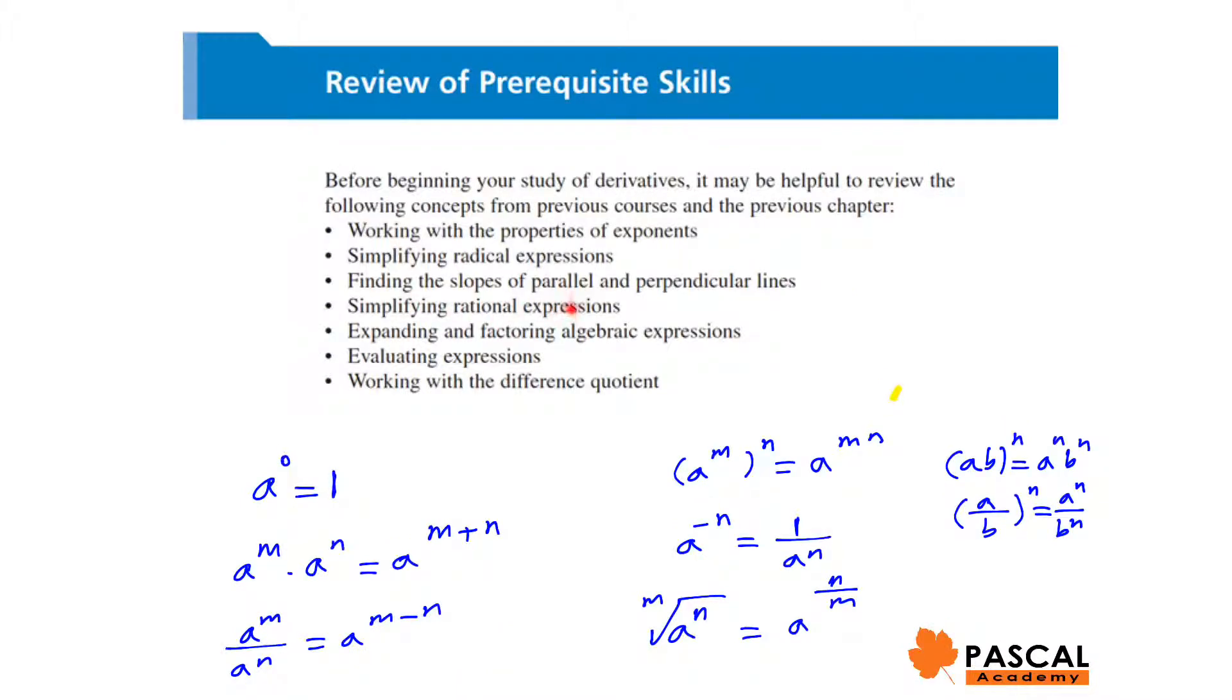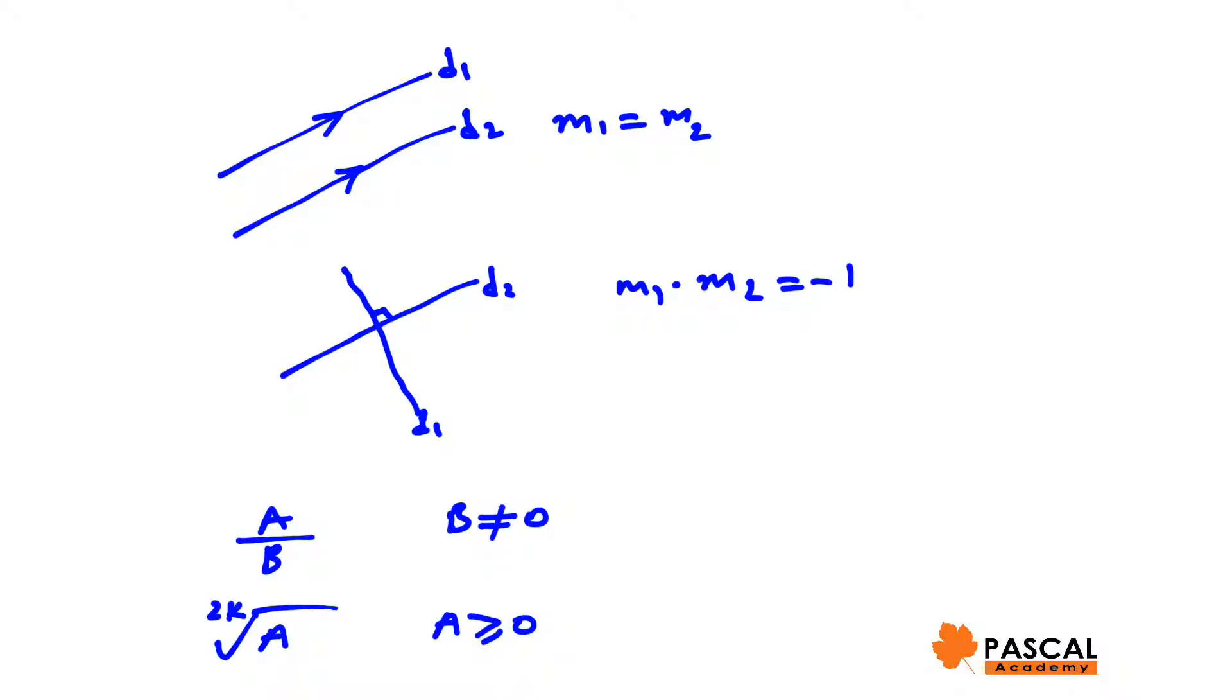Simplifying rational expressions. Common denominator and factoring are two important points when we work with rational expressions. One important thing is when we deal with rational expressions, we have to make sure that the denominator is not 0. When the denominator of a over b is 0, a over b is undefined. We also know when the index of a radical is even, the expression under the radical should be greater than or equal to 0.